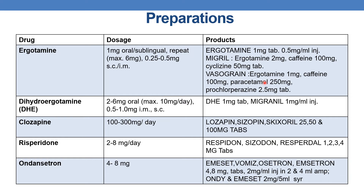The next marketed preparation is Vasograin. It contains ergotamine 1 mg, caffeine 100 mg, paracetamol 250 mg, and prochlorperazine 2.5 mg tablet — so Vasograin contains 4 drugs. These are some of the marketed preparations of ergotamine.